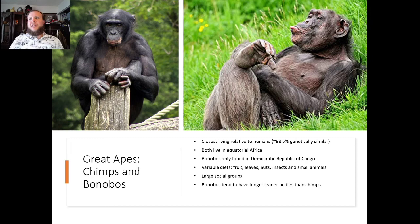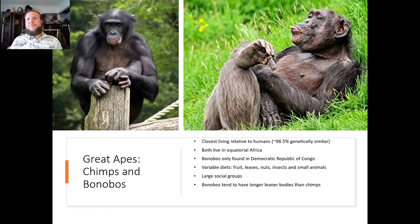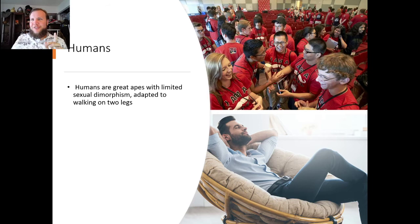Our closest ancestors are chimps and bonobos. Both live in equatorial Africa, with bonobos found in the Democratic Republic of Congo. They have variable diets including fruit, leaves, nuts, insects, and small animals — including monkeys and each other. Chimps will cannibalize other chimpanzees, especially infants. They have large social groups. Bonobos tend to have larger, leaner bodies than chimps and are darker in complexion than chimpanzees.